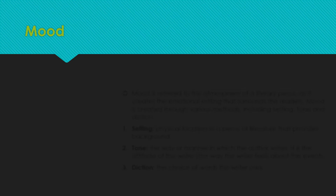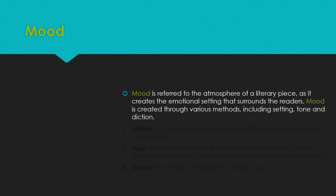The second two things that we will be covering this week — you're going to find them in the text later on and in the questions. The first thing is called mood. Mood refers to the atmosphere of a literary piece of text, as it creates the emotional setting that surrounds the readers. Mood is created through various methods, including the setting, tone, and diction.